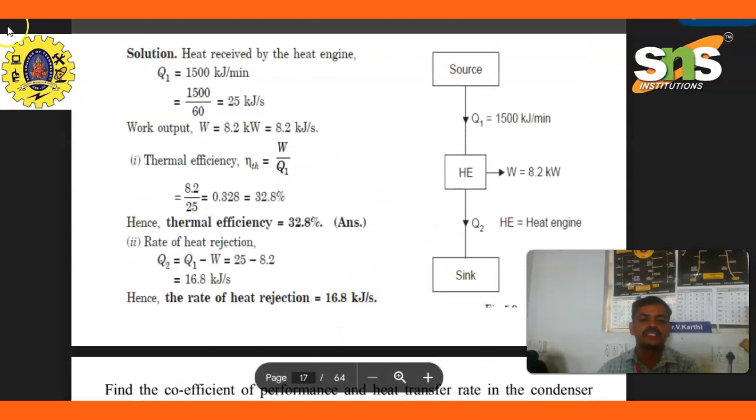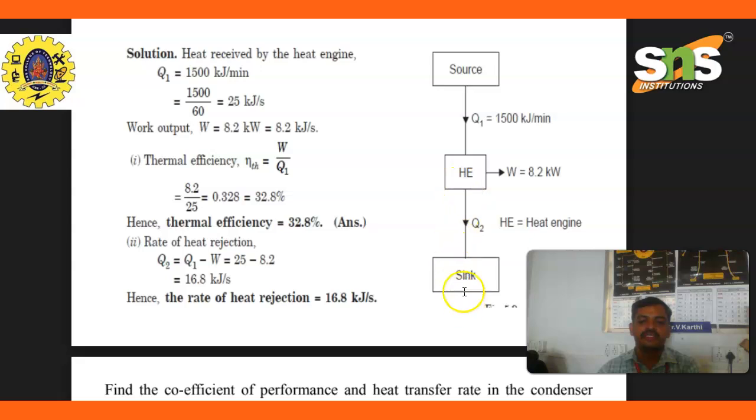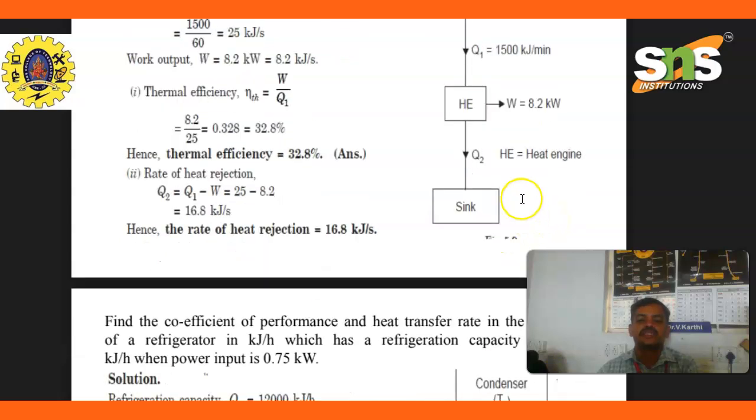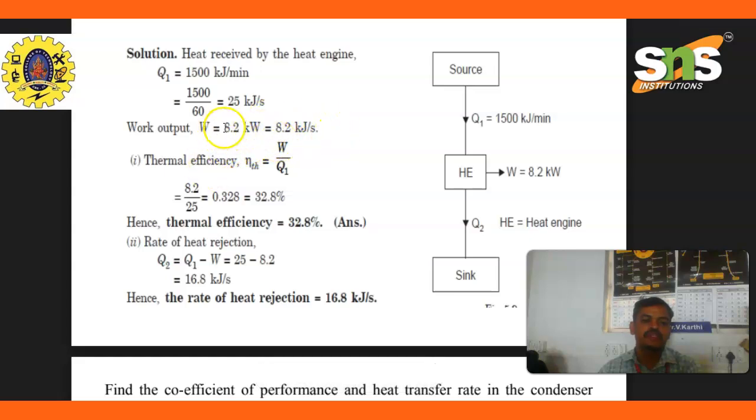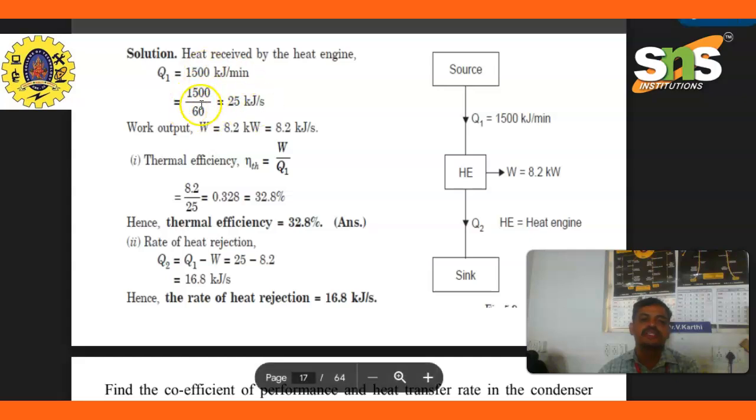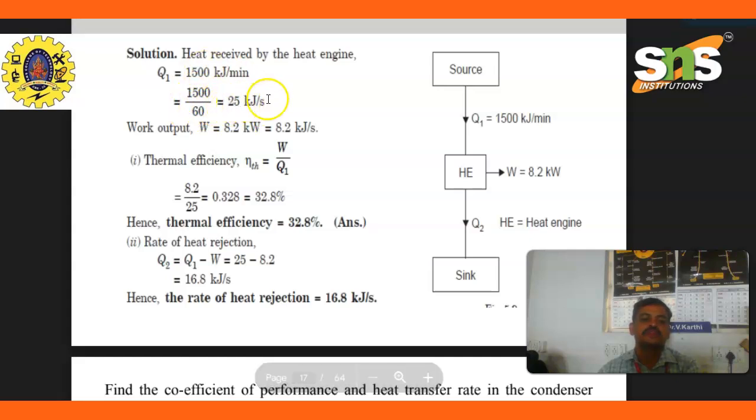Solution: Heat supply Q1 equals 1500 kilojoules per minute. Work output W equals 8.2 kilowatts. Converting: 1500 divided by 60 equals 25 kilojoules per second.